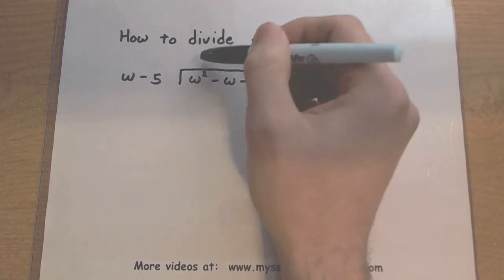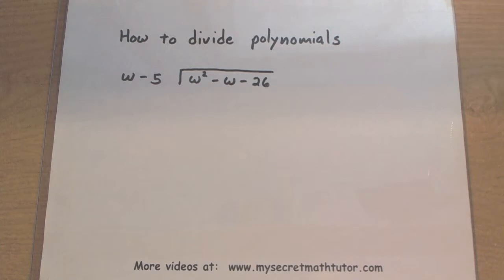First, we're going to figure out what number to put up top. We want to multiply that number by the w minus 5, put it down here, and then subtract it away so that we can get a new number and repeat the process over again.